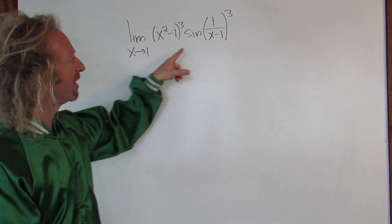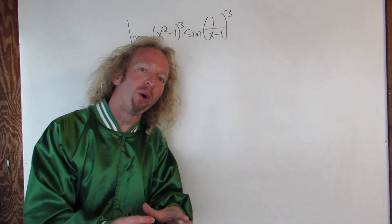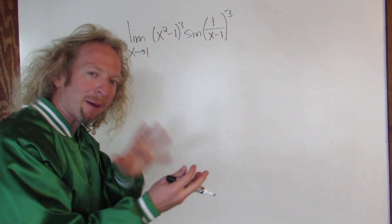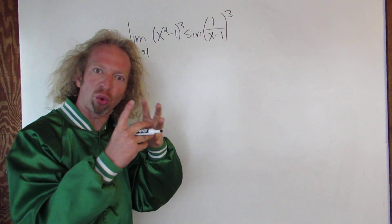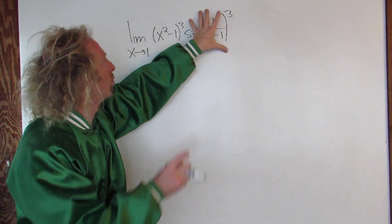So how do you do that? Well, sine is bounded by 1, right? That means it's trapped between negative 1 and 1. So this term is always controlled. It's always between negative 1 and 1.